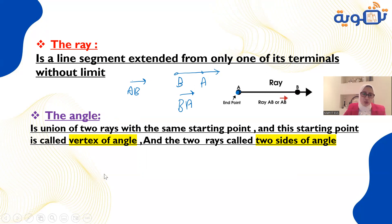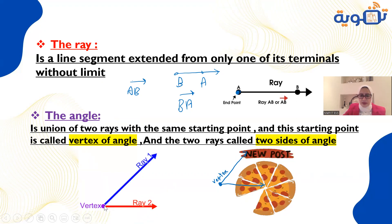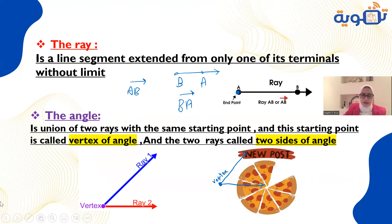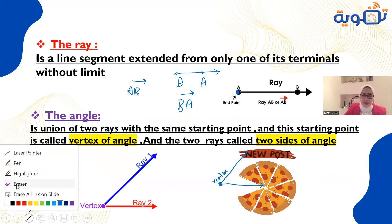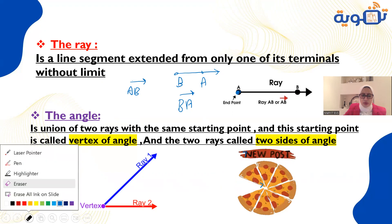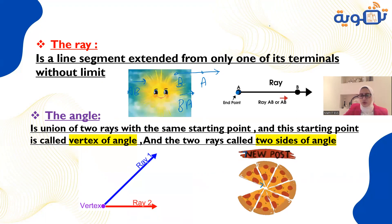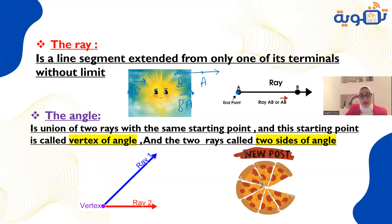An angle is the union of two straight lines having the same starting point. This starting point is called the vertex. The two lines are called the sides of the angle. You can see angles all around you — in pizza, corners of windows, chairs, and many other items. You can see rays in lamps, the sun, and so on.